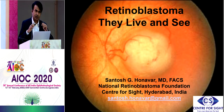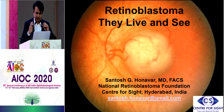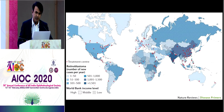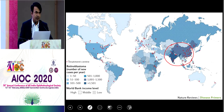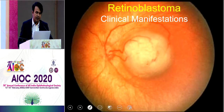I'll be speaking about retinoblastoma. This is the world retinoblastoma map. If you look at the hotspots, India and China account for a majority of cases because of a higher live birth rate inherent to these countries. In India we have about 1,500 cases of retinoblastoma every year, whereas in the world there are about 4,500 to 5,000 — meaning one-third of all RB cases occur in India.